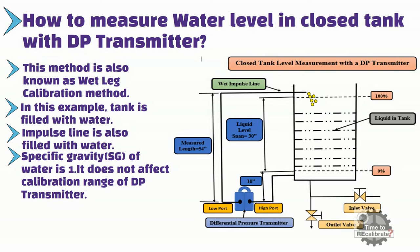In this example, the differential pressure transmitter is located 10 inches below the zero percent baseline. One end of the tube is connected with the high port of the transmitter and the other end is connected with the tank. This tube is also filled with water and puts pressure on the high side of the transmitter. This is the reason that transmitter position is very important in closed tank level measurement. If you do not measure the distance accurately from the transmitter to the zero percent baseline, you won't be able to measure level accurately.